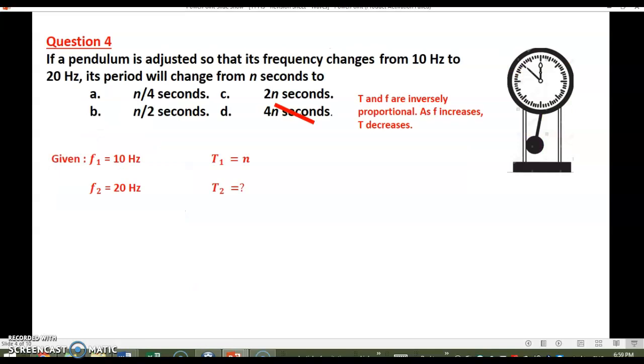Question four. The pendulum is adjusted so that its frequency changes from 10 hertz to 20 hertz. Its period will change from n seconds to. We have four options: n over 4 seconds, n over 2 seconds, 2n seconds, and 4n seconds.